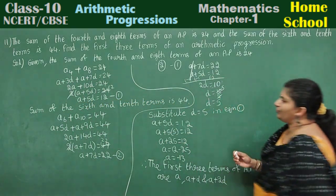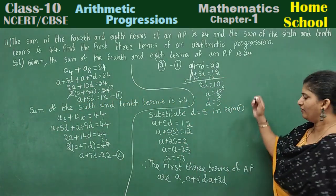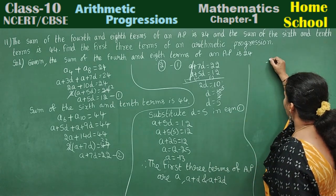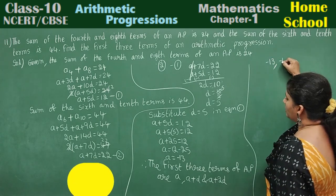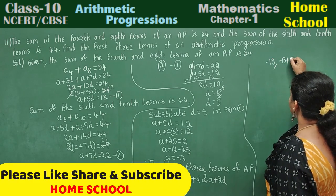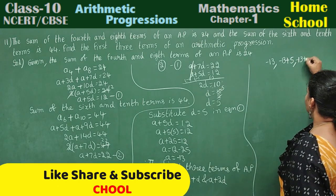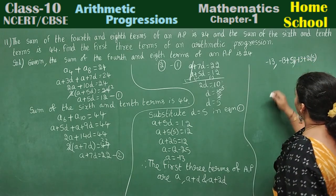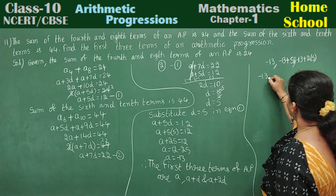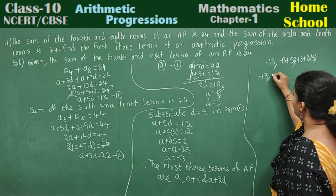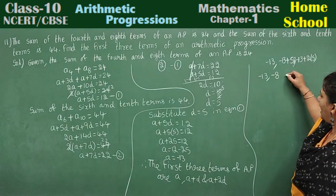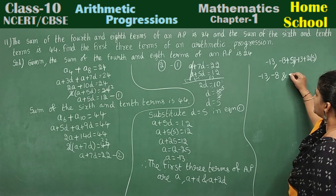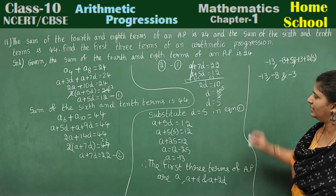Now substitute A and D values here. A value is minus 13. A plus D: minus 13 plus 5. A plus 2D: minus 13 plus 2 into 5. Minus 13 plus 5 will be minus 8. And minus 13 plus 10 will be minus 3.